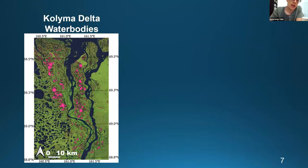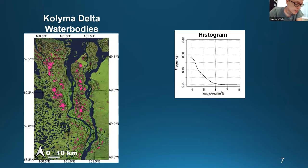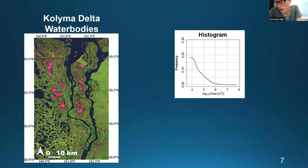Going back to the Kalima, we overlay the extracted water bodies in pink. Looking at the histogram of water body areas, people since the 20th century have hypothesized that lakes follow a power law or log-normal distribution, or that an inundated landscape would produce one. But the water body area is neither clearly power law nor log-normal, which begs the question: what is the water body area PDF?